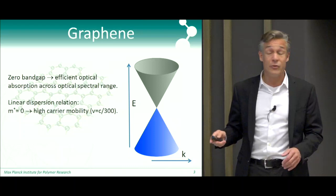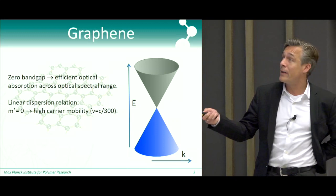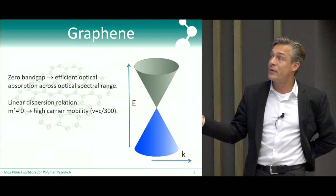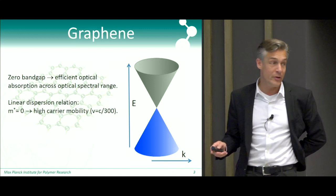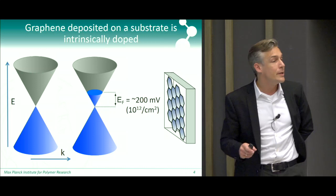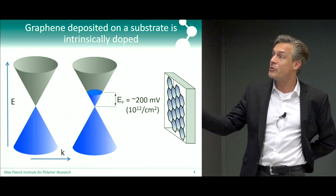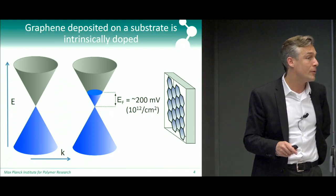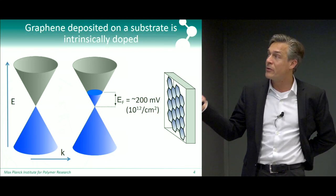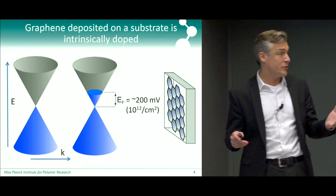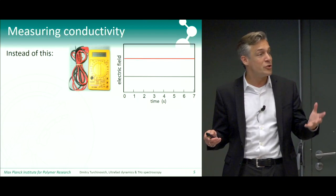I'll very briefly introduce graphene. It's a semi-metal with a zero band gap, which means it can absorb light at all frequencies. The linear dispersion relation gives rise to very high mobility of charge carriers, making it an interesting material for electronics. When you put graphene on a silicon dioxide substrate, it gets doped, so the Fermi level shifts from the Dirac point and you get about 10^12 electrons or holes per square centimeter, corresponding to a Fermi energy of about 200 millivolts.